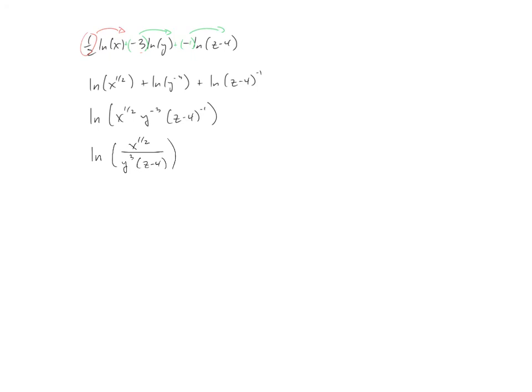And so the last step in all of this now is again to recognize that rational exponents are really radicals. So we'll have a square root of x over y cubed times z minus four for our final answer.